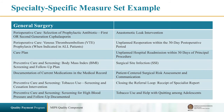Here is an example of the general surgery specialty-specific measure set. For those who have reported the PQRS general surgery measures group in the past, CMS has included measures from that group in this measure set. You will need to report a minimum of six measures, or as many measures that apply if less than six.